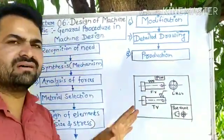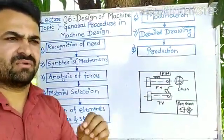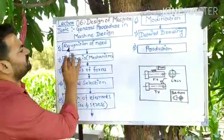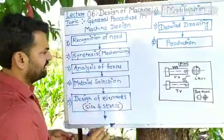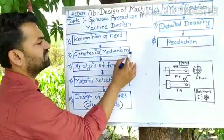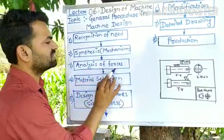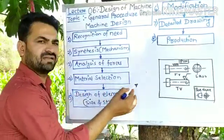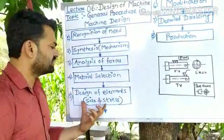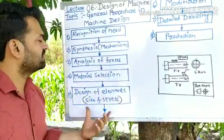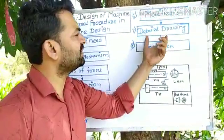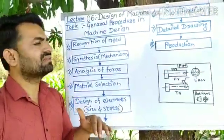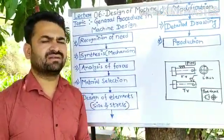These are the different steps involved in the general design procedure that a designer must follow: recognition of need, synthesis of mechanism (requiring theory of machine knowledge), analysis of forces (requiring strength of material and mechanics knowledge), material selection (requiring material science knowledge), design of element, modification, detail drawing, and production.